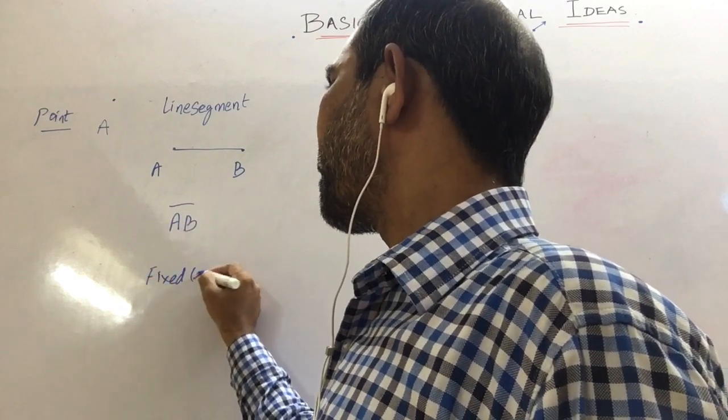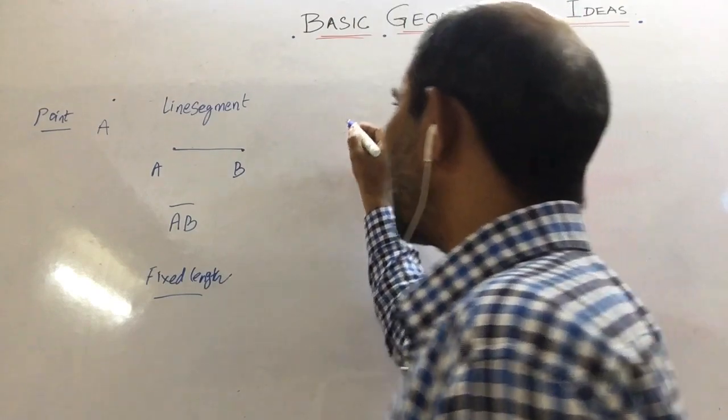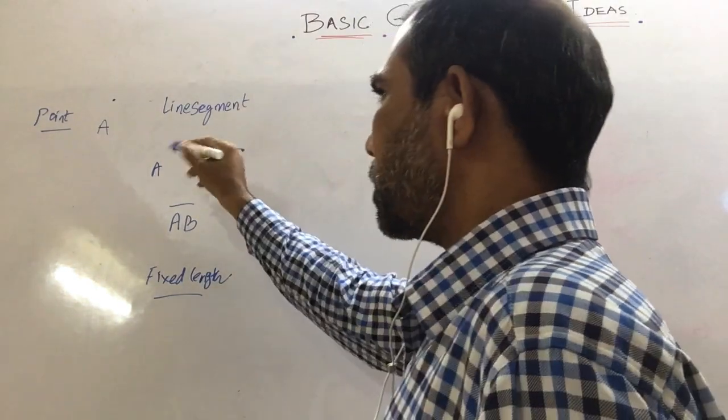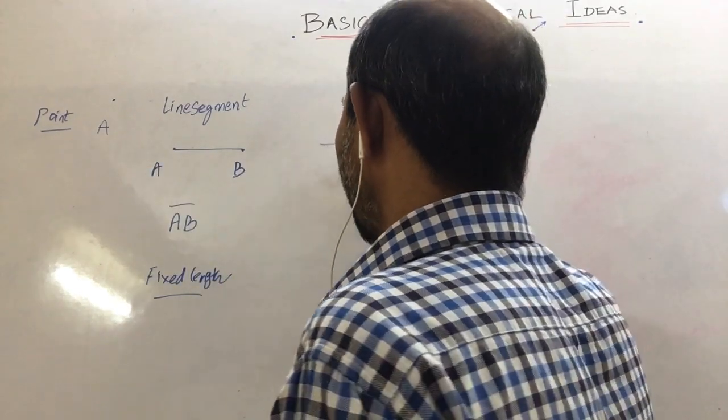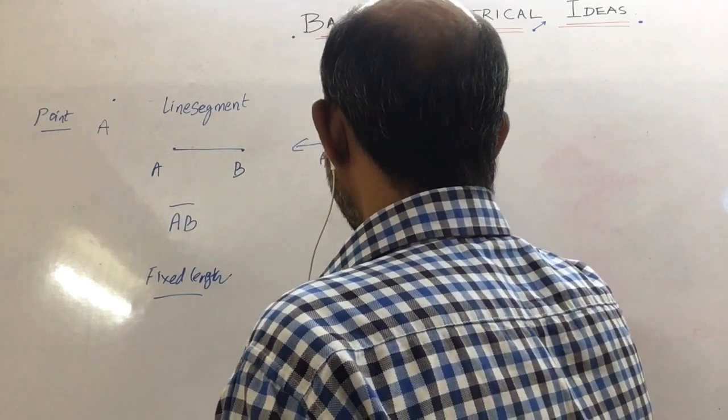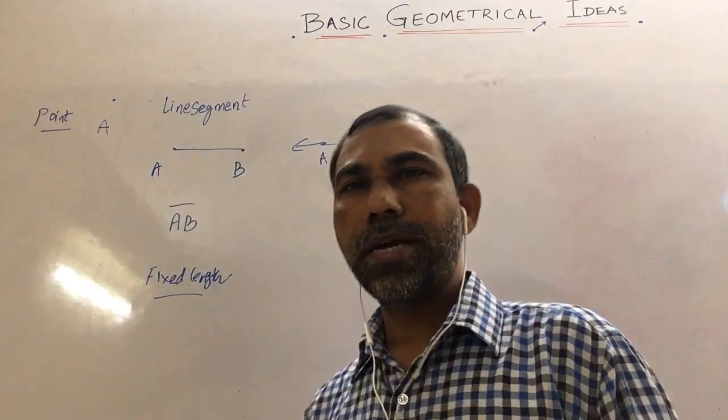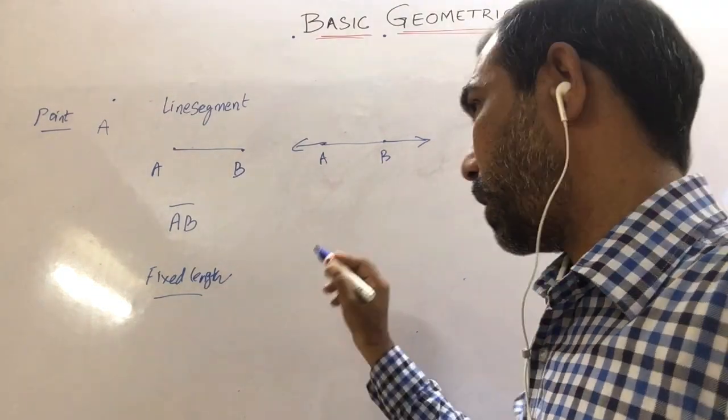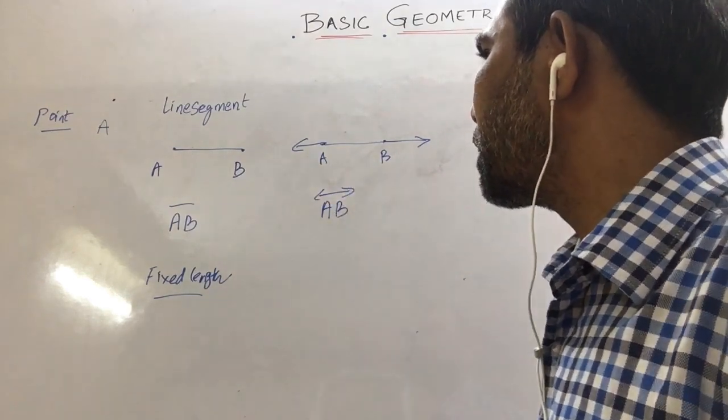Then we have a straight line. You can extend these two points towards both directions in opposite directions. If you extend this side and extend towards right side, this particular line segment or line is called a straight line. This straight line is represented by AB with the symbol line.